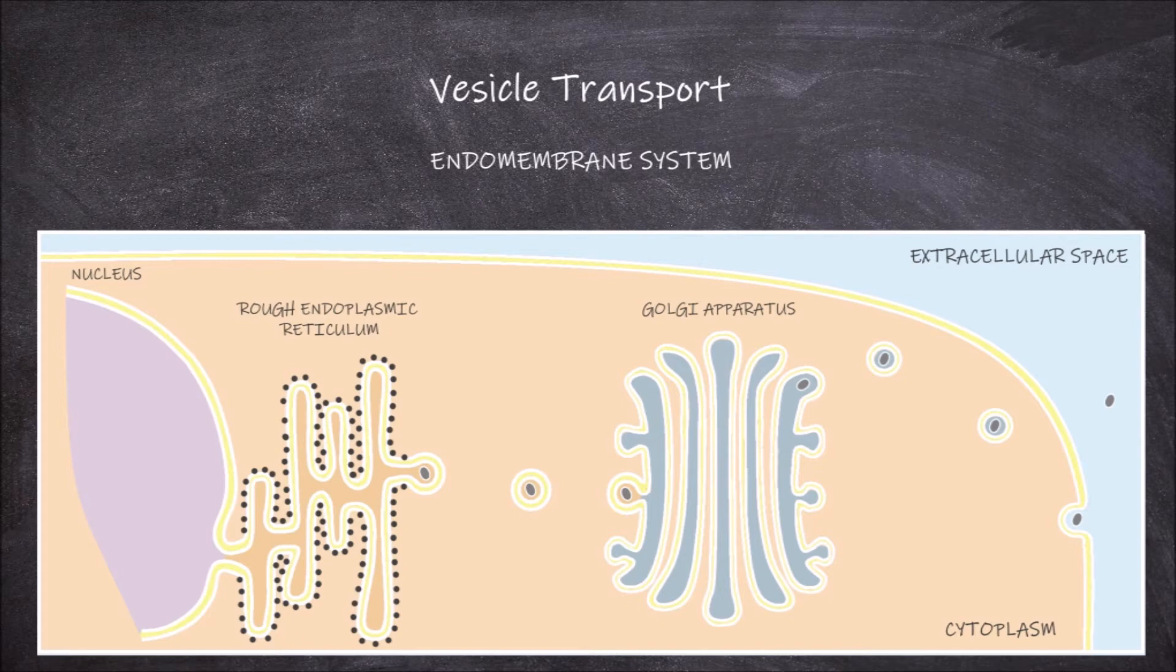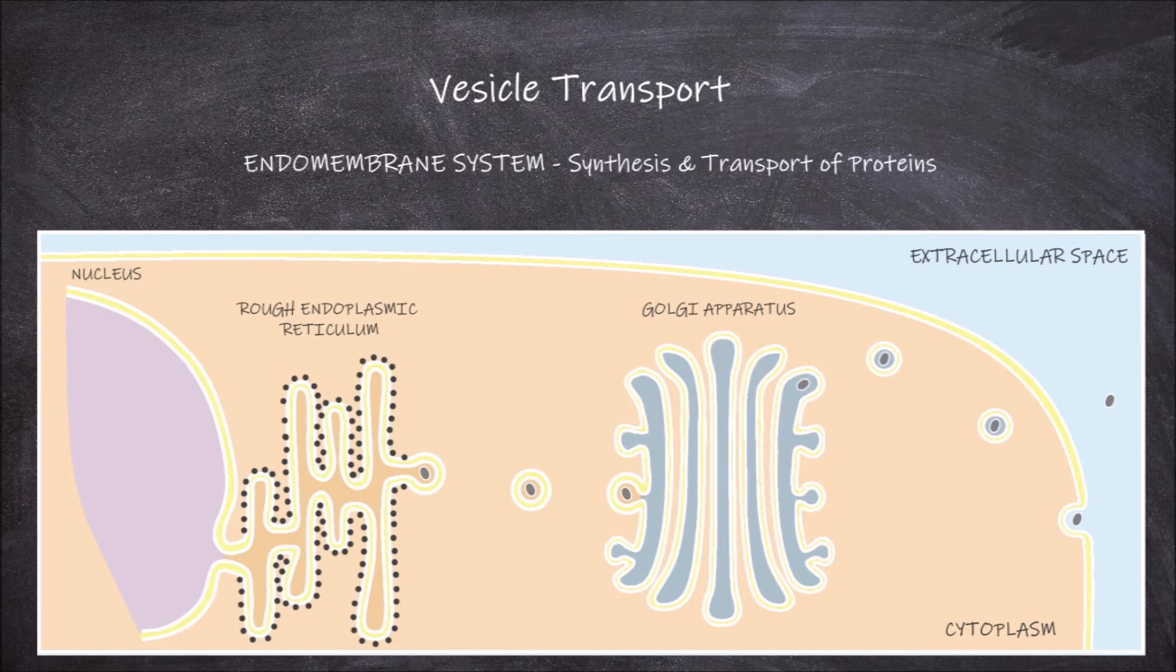The smooth endoplasmic reticulum, which is not shown here, is involved in the synthesis of lipids and hormones, whereas the rough endoplasmic reticulum is involved in the synthesis of proteins. We are going to look specifically at the synthesis and transport of proteins within this endomembrane system.